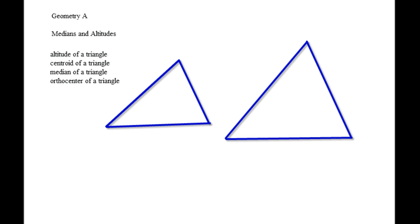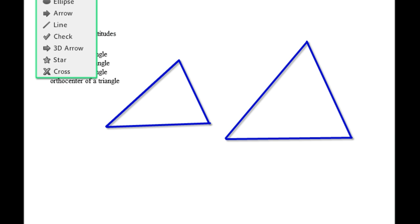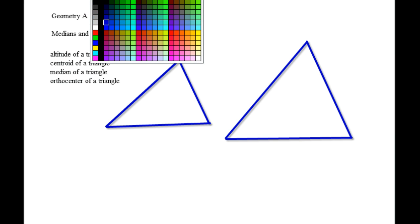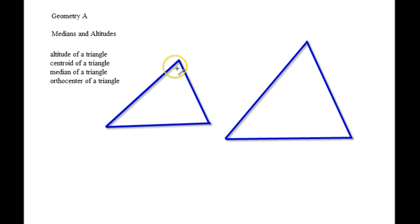First off, let's start with median. We'll start with this triangle. Median goes from the opposite midpoint to the vertex, the opposite vertex. So there's one median, and that just means that these two are cut into equal pieces.